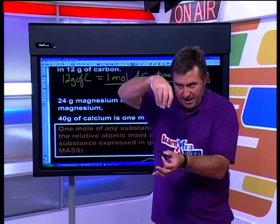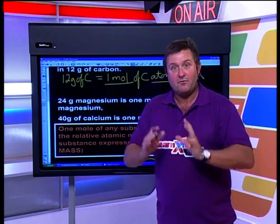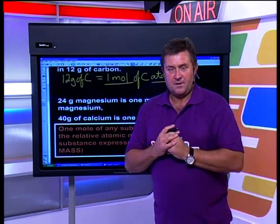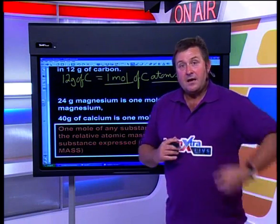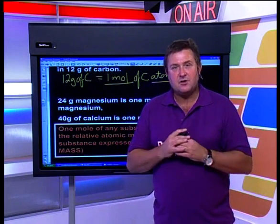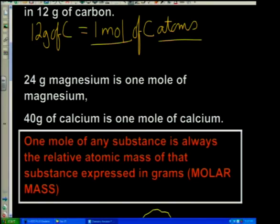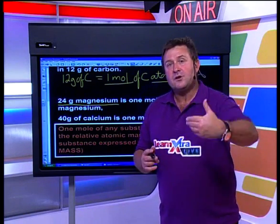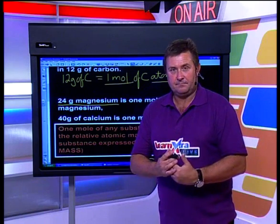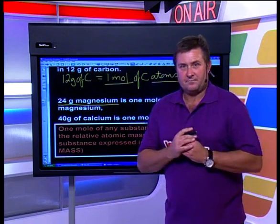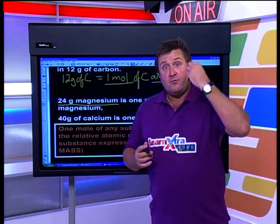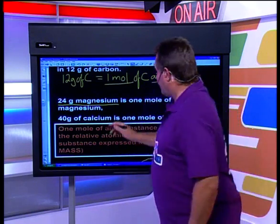If you had a scale and massed out 12 grams of carbon, you'd have exactly one mole of carbon. For magnesium, the relative atomic mass is 24, so 24 grams of magnesium represents one mole. For calcium, the relative atomic mass is 40, so 40 grams of calcium represents one mole of calcium.